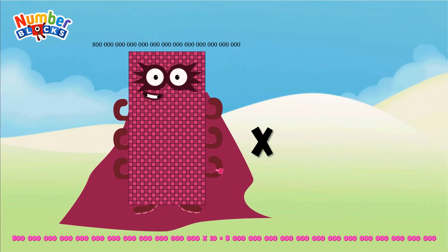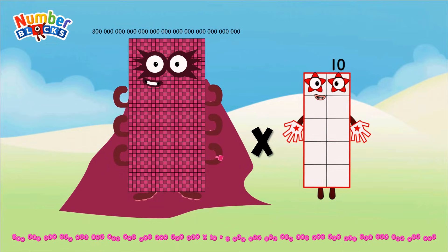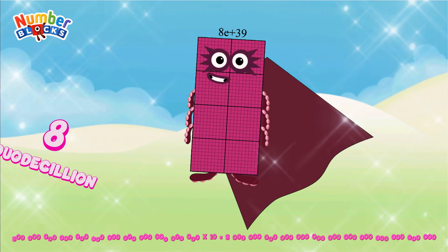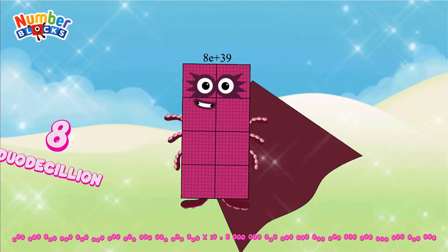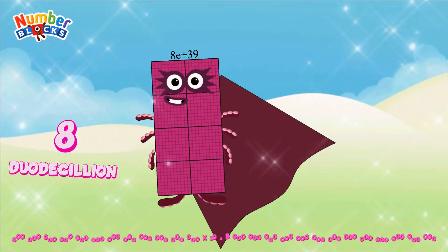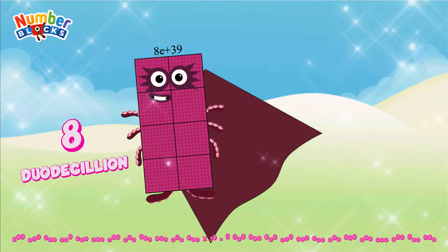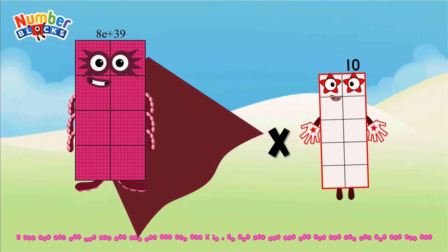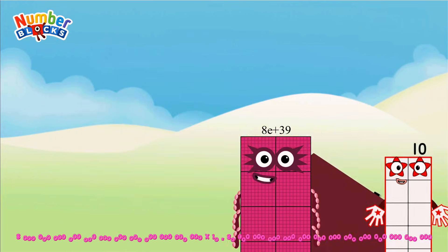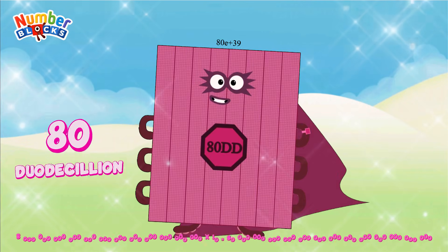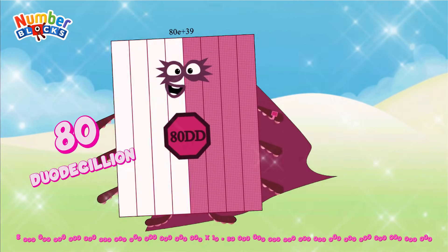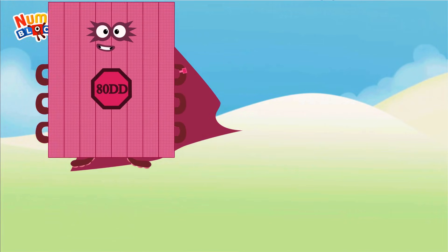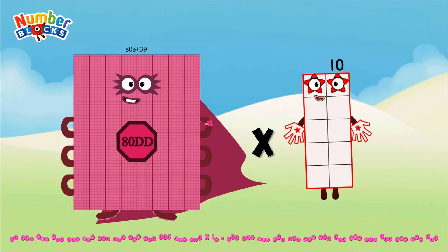800 undecillion multiplied by 10 equals 8 undecillion. 8 undecillion multiplied by 10 equals 80 undecillion.